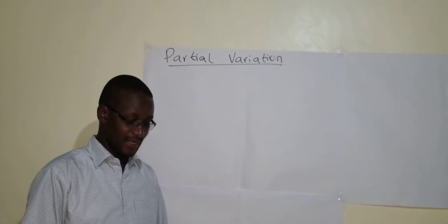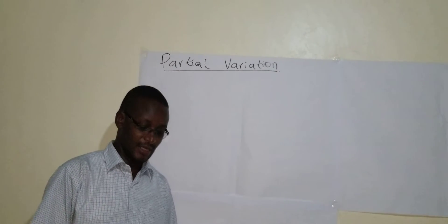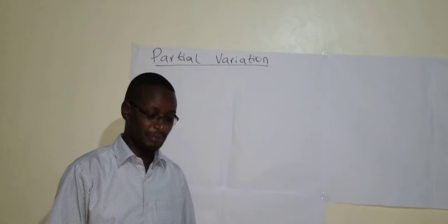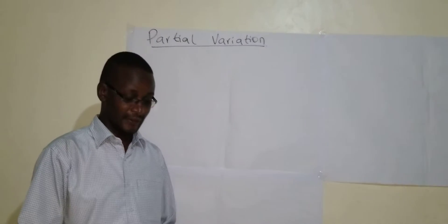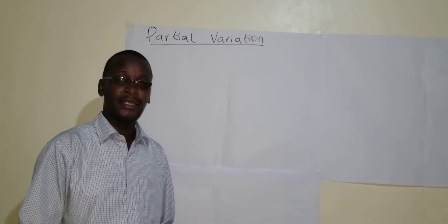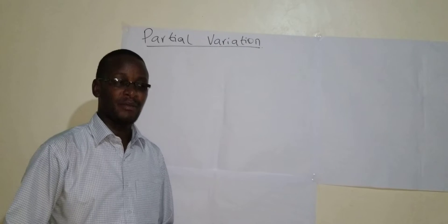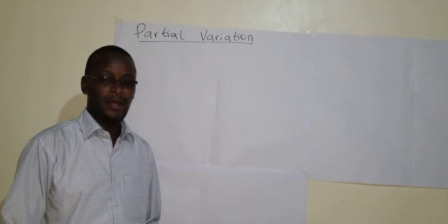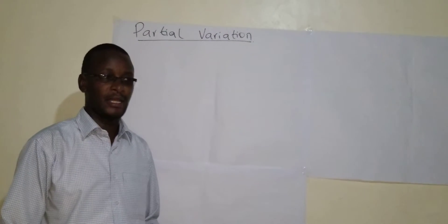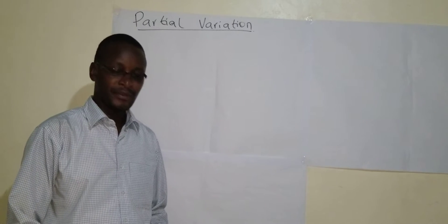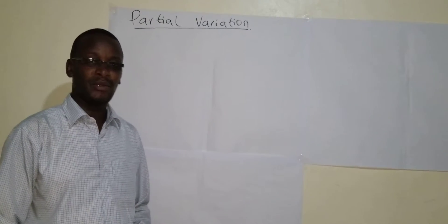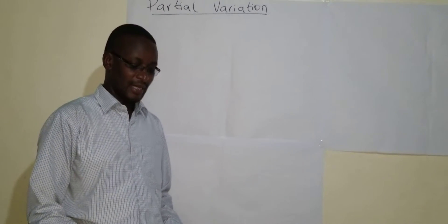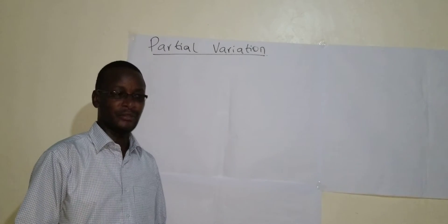I hope you are still doing well. This is our final lesson in this topic of formula and variation. Previously, you were looking at joint variation, and I hope you did the assignment that I gave you. Today, we look at the last type of variation, and that is partial variation.